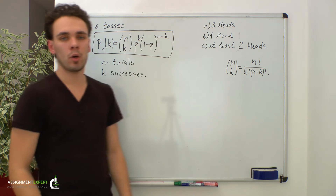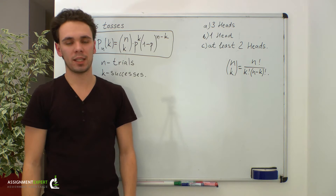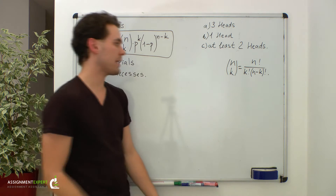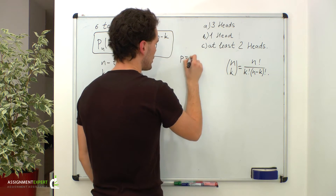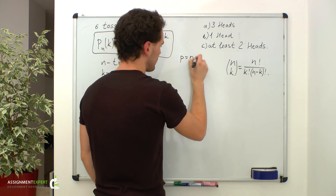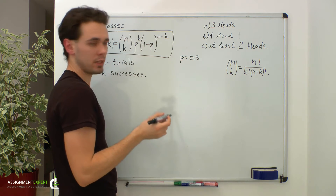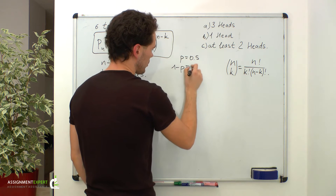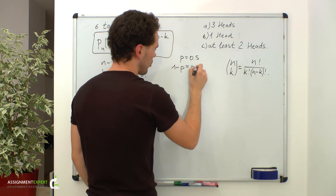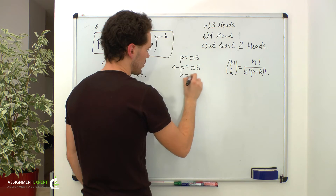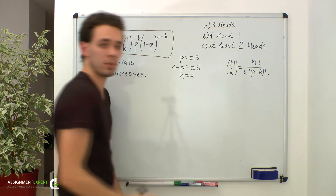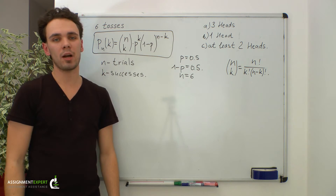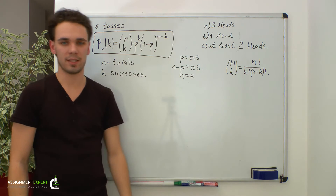When we toss a coin we can get either head or tail, and the probability of getting head p is equal to 0.5. Then the probability of getting tail is 1 minus p, which also equals 0.5. n is equal to 6 because we have six tosses of the coin.